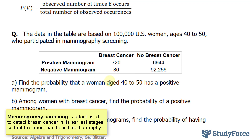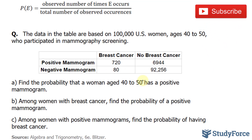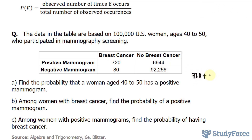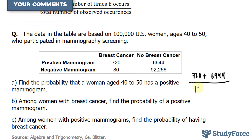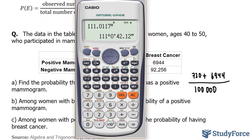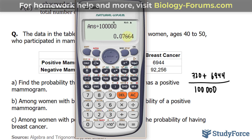In question A, we're asked to find the probability that a woman aged 40 to 50 has a positive mammogram. As you can see from the chart, we have 720 that were positive and had breast cancer, and 6,944 that were also positive but had no breast cancer. So we add these two numbers and divide by 100,000: 720 plus 6,944, all divided by 100,000, which gives us 0.07664.